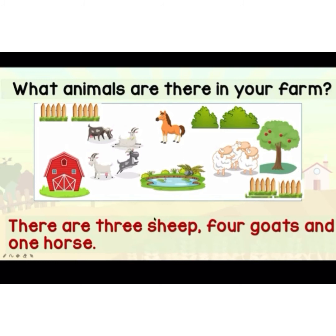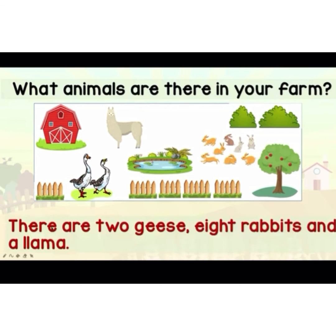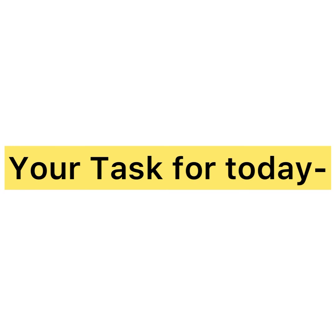Jangan tambah 's' pada sheep — goats boleh. English is all about memorizing — you have to memorize all the English things. What animals are there on your farm? There are two geese — geese tu satu goose dua geese — eight rabbits, and a llama. Lama yang putih tu takde kat Malaysia, dia kat overseas je.